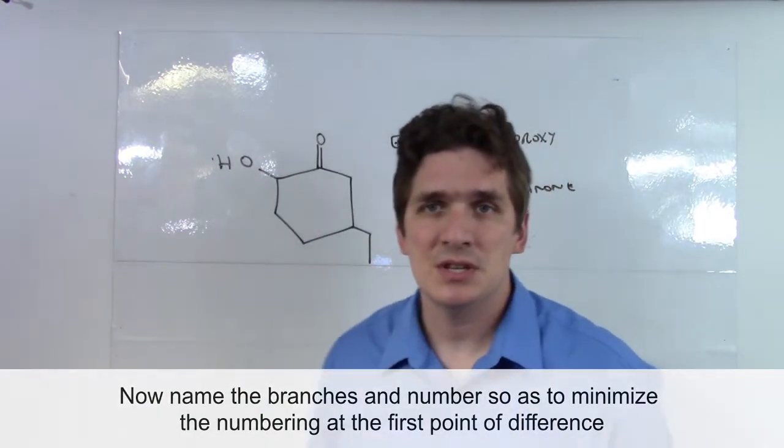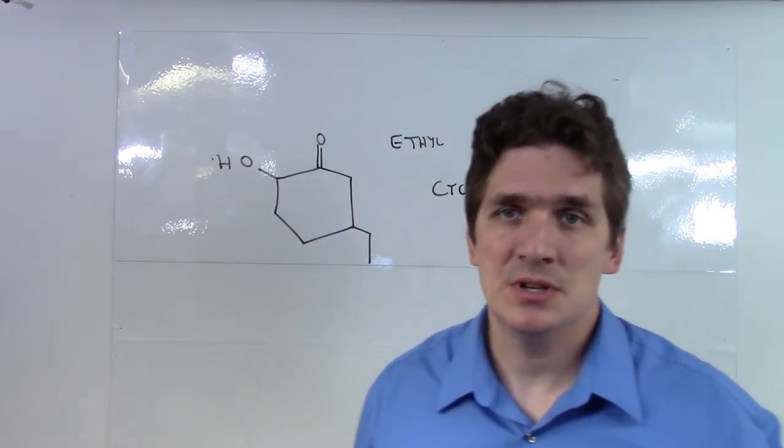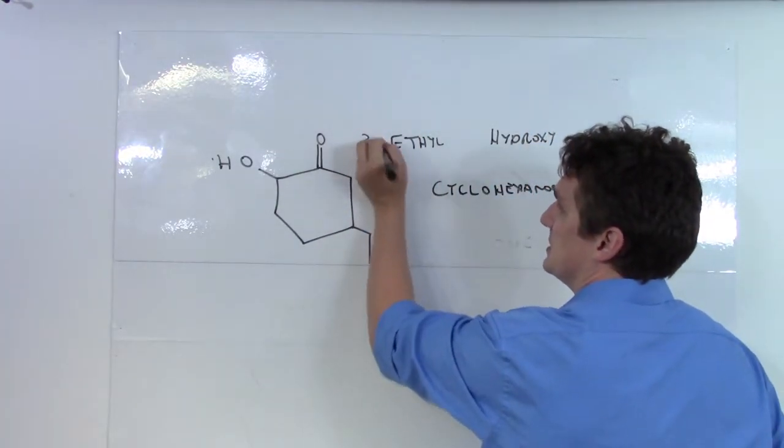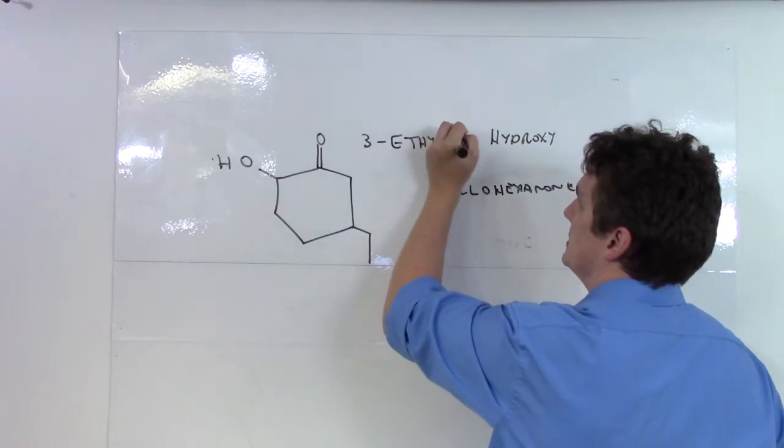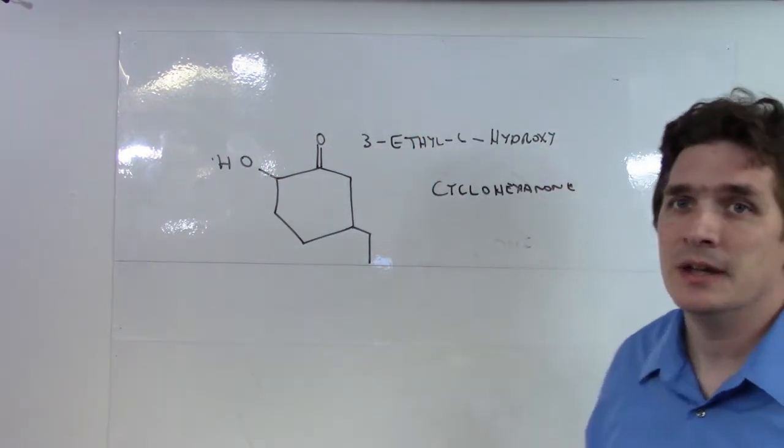And we want to name this in such a way to minimize the number of the first difference. So, since the ethyl comes first, this is 3-ethyl-6-hydroxy-cyclohexanone.